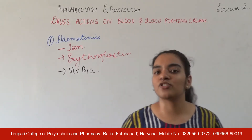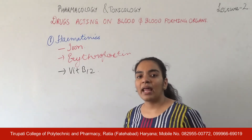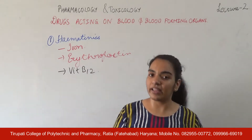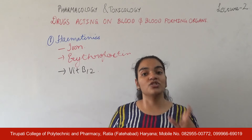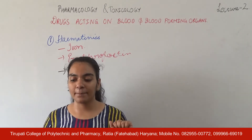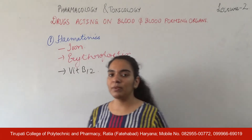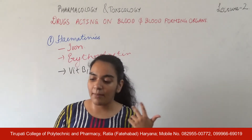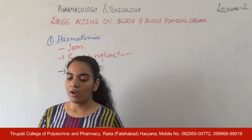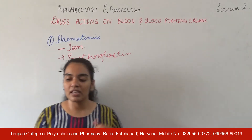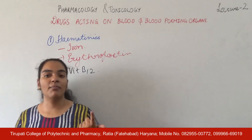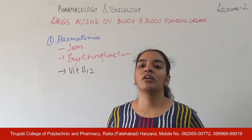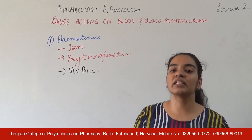Vitamin B12 converts methyl folic acid back to tetrahydrofolate (THFA) so the body can absorb it. If Vitamin B12 is deficient, methyl folic acid accumulates, leading to neurological disorders and abnormal fatty acid synthesis. Megaloblastic anemia is due to the absence of Vitamin B12 and folic acid, resulting in defective maturation of RBCs.